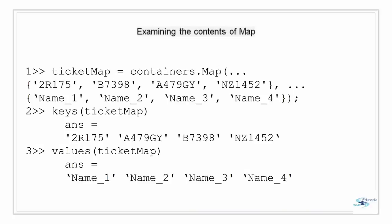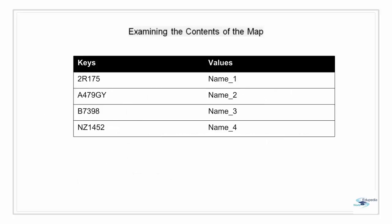Examining the contents of a map: a map consists of two parts — a unique key and its corresponding value. To find all the keys we use the keys method, and to find all the values we use the values method. Here I am creating a new map called ticketMap that maps airline ticket numbers to the holders of those tickets. We construct this map using the code in line 1. We can view all keys using the keys function and all values using the values function, passing the map object name as an argument. The resulting table shows four character keys — the PNR numbers — mapped to the names of the respective passengers.